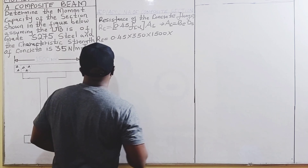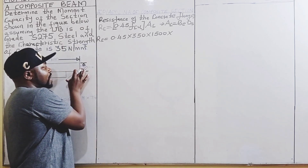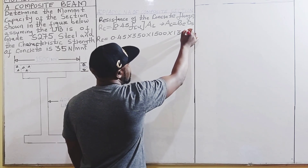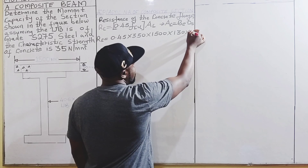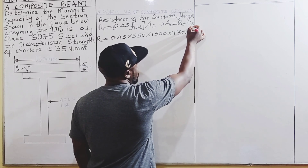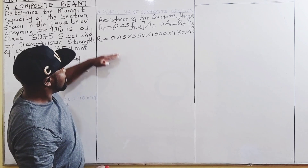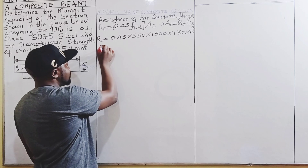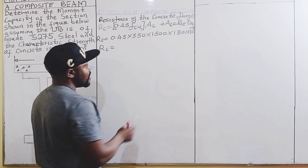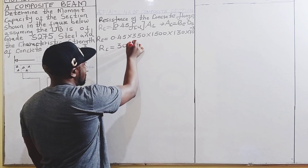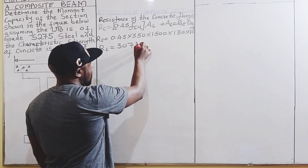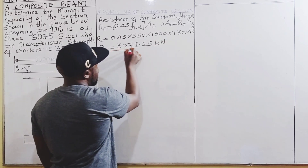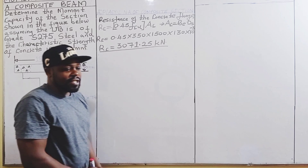Multiplying by the effective breadth of 1500 millimeters and the depth of the concrete flange of 130 millimeters, then dividing by 1000 to convert to kilonewtons, we get a resistance of Rc = 3071.25 kilonewtons. That is the resistance of the concrete flange.